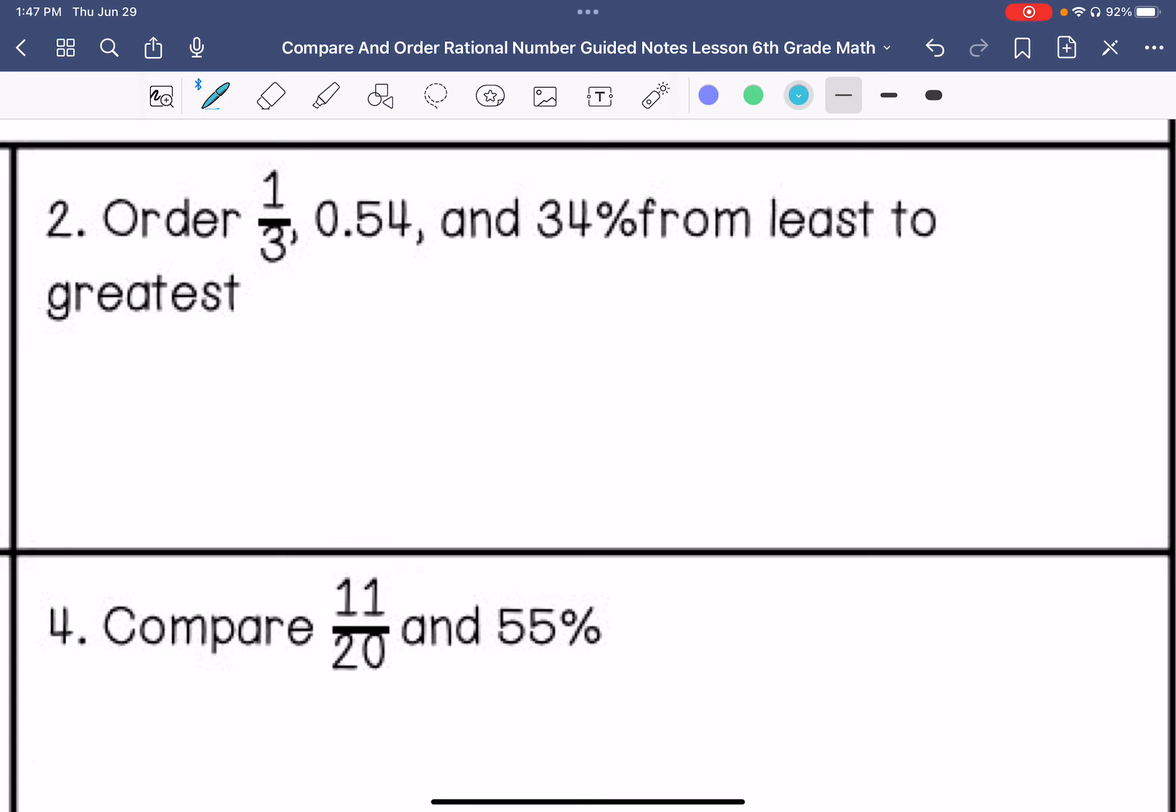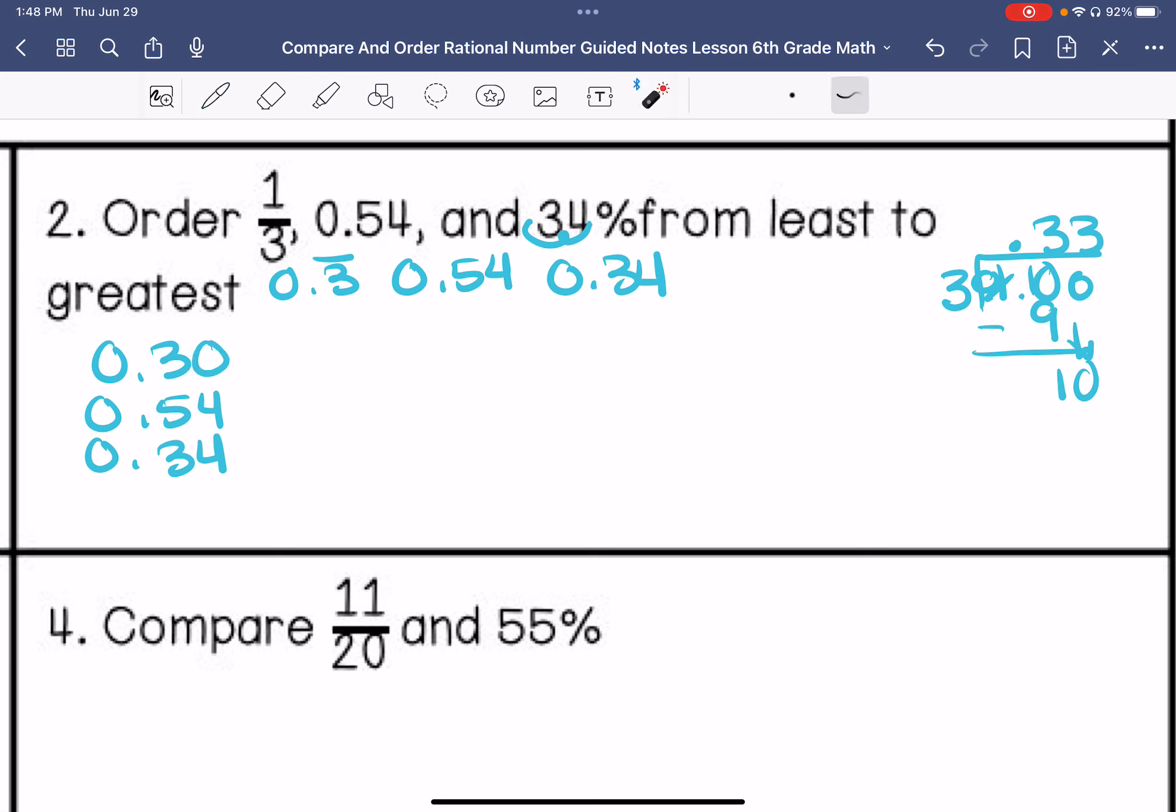Number two, we are going to order one-third, 0.54, and 34% from least to greatest. I'm going to change these all to a decimal. My division brain is not working today. So 0.3 repeating, 0.54, and 0.34. So if I compare these from least to greatest, let's put placeholder here. These are the same. The threes are less than, and the zero is less than 4. So one-third is first, then 34%, and then 0.54.